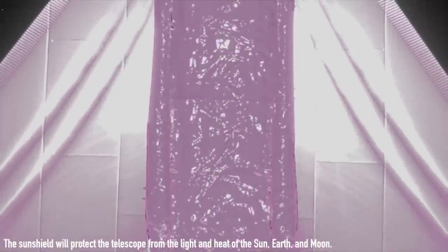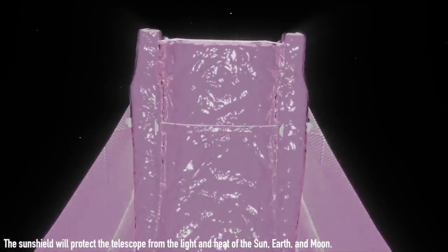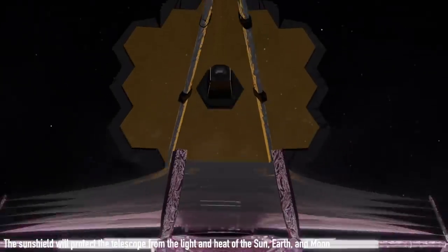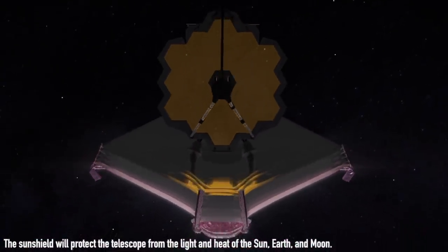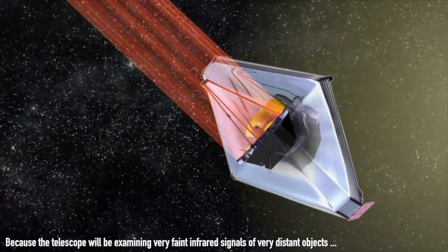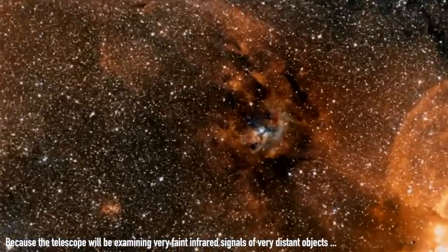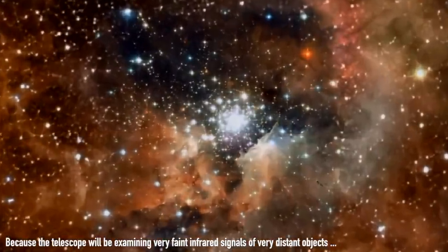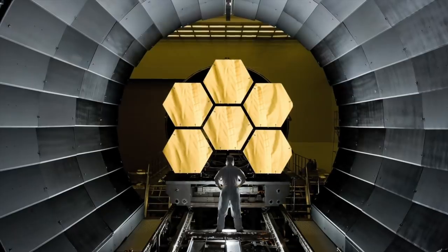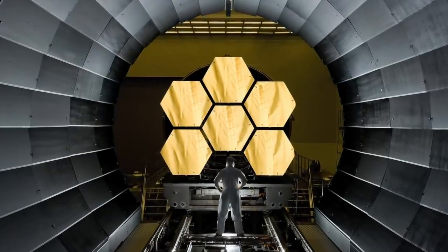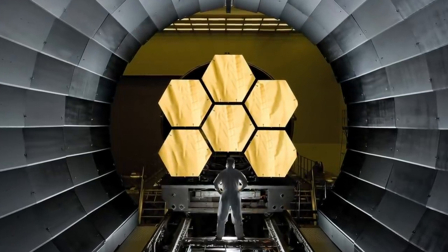So the mission was designed to last a bit over five years, depending on the fuel used. But since the launch basically nailed it, and the Ariane rocket put Webb on a trajectory that did not require drastic course corrections, we now should have over ten years of service, if not significantly longer if the JWST team can conserve even more fuel over the course of its operation.